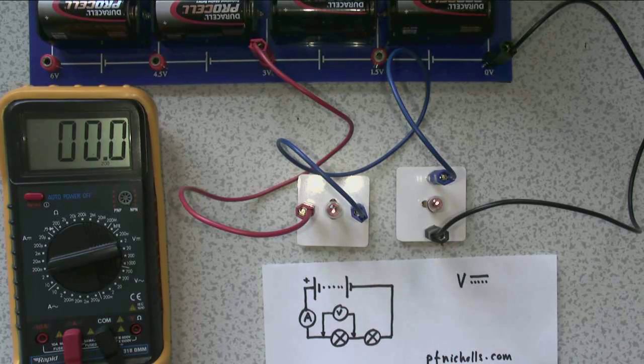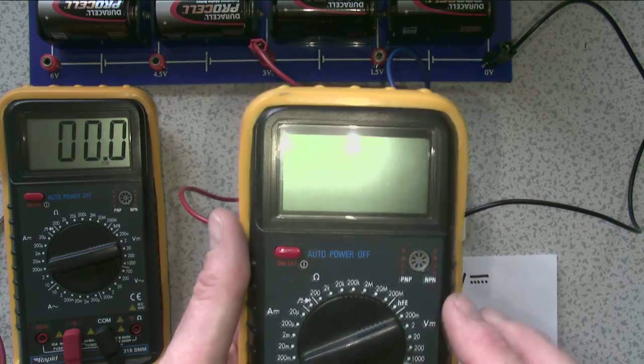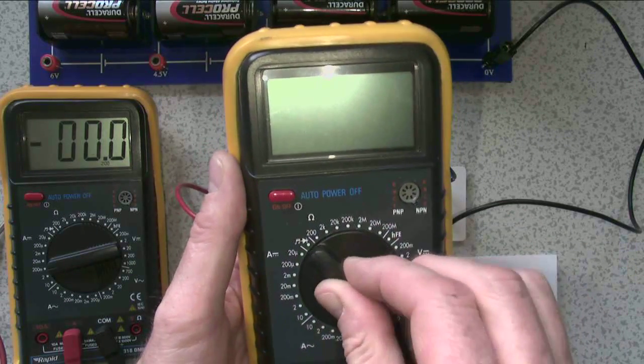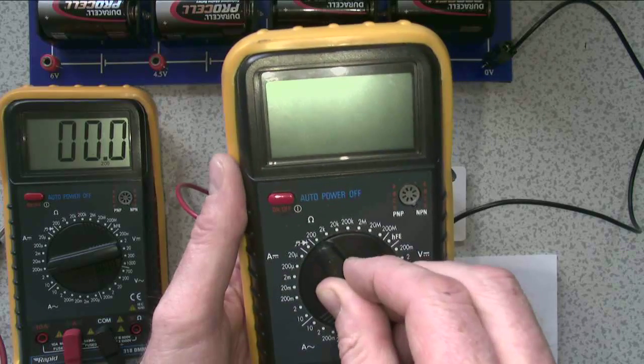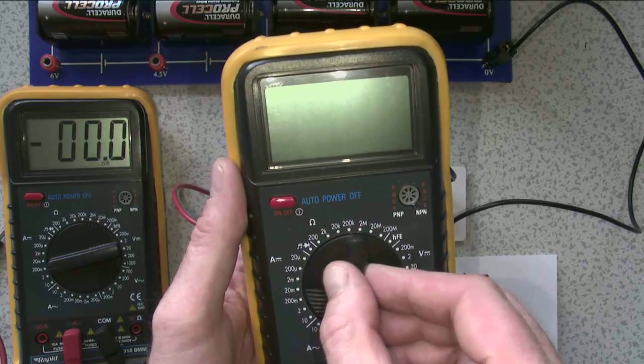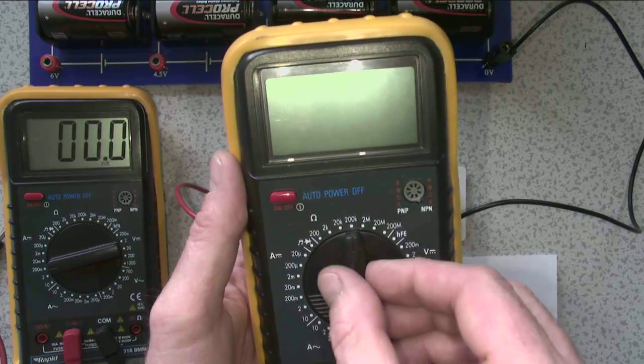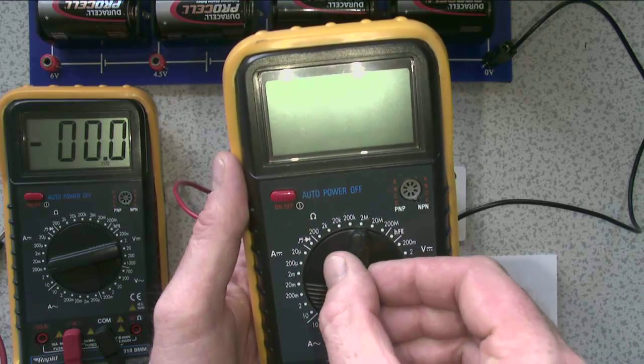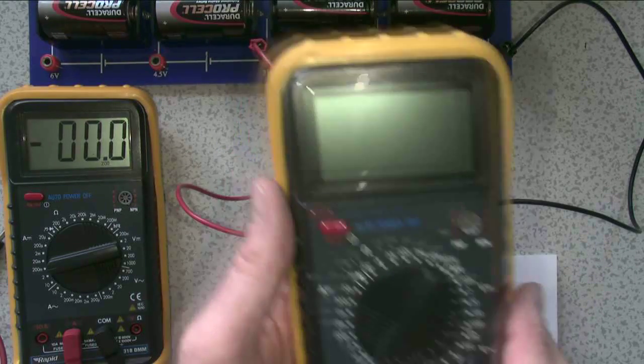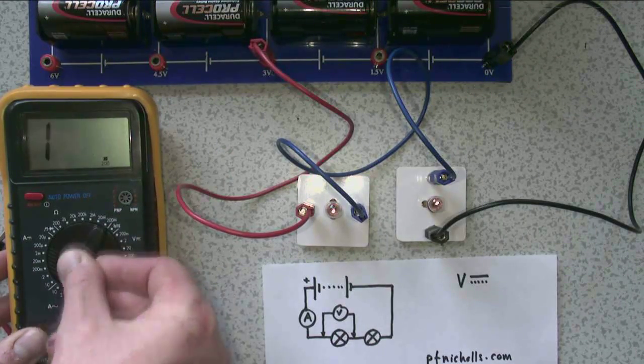So to do this, I turn it to the resistance setting, which on this multimeter is this setting across the top here. And I'm going to turn it to be, well I've got a choice of 200 ohms, 2k, which is 2,000 ohms, 20k, 200k, which is 200,000 ohms, 2 mega ohms, which is 2 mega ohms, 20 mega or 200 mega. So I'm just going to start at the highest setting to see what happens. So I'll turn my multimeter to measure 200 mega ohms.